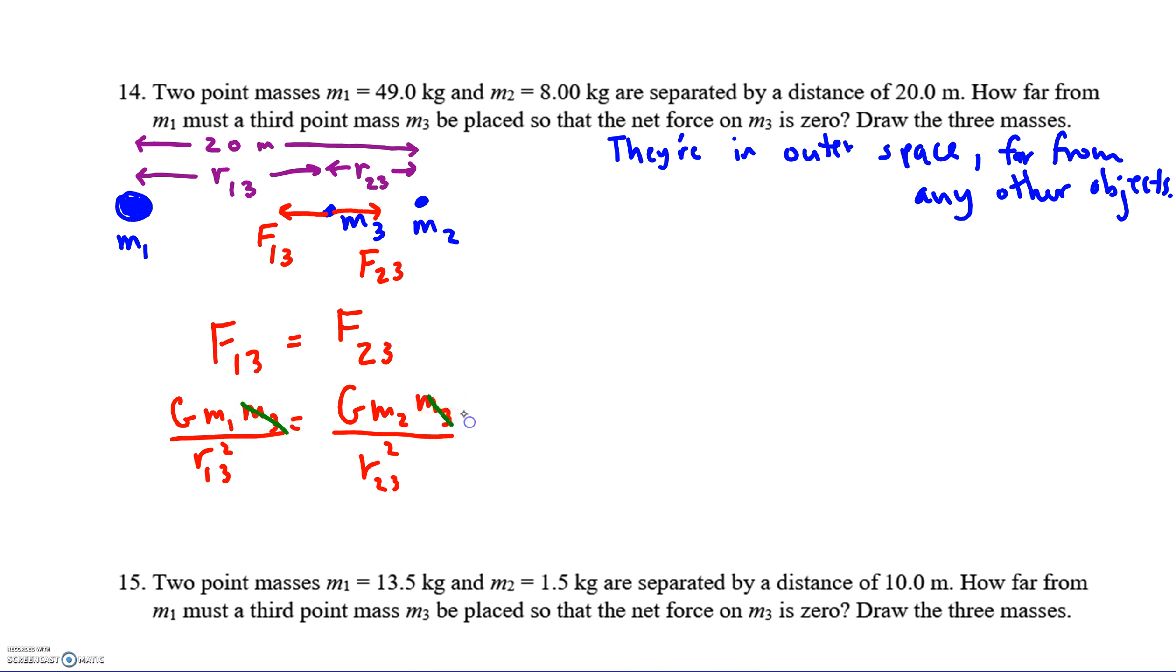We can cancel out the M3s, we can cancel out the Gs. I'm going to plug in for M1. I have 49 over R13 squared equals 8 over R23 squared. I've got this equation. But if I look back up to the distances, I realize that adding R13 plus R23 gives me the total 20. I now have two equations and two unknowns, so I can solve this using algebra.